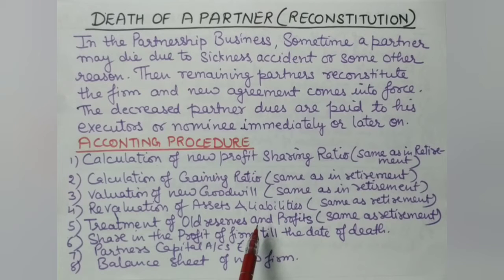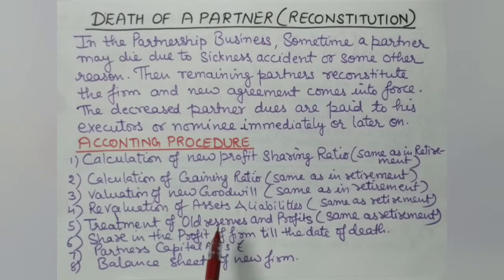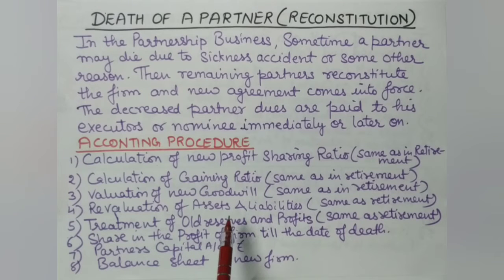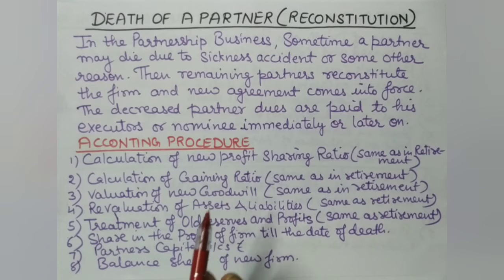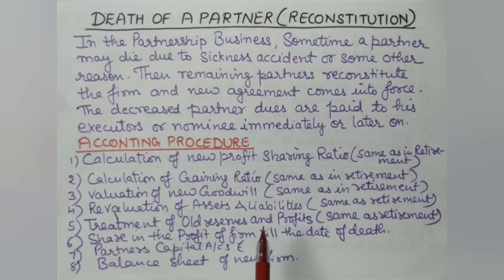Any profit or loss from revaluation is shared by the old partners in the old ratio, including the deceased partner — just as in retirement where the retiring partner also gets a share of revaluation. Fifth, old reserves are also distributed to old partners in the old ratio, including the deceased partner. These five points are all the same as in retirement — there is no change.